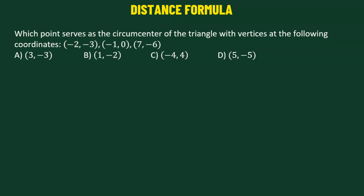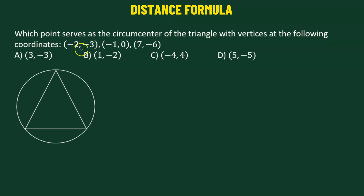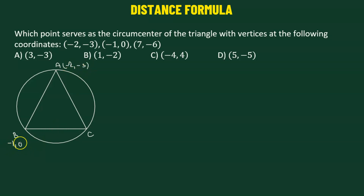In this problem, we need to find out the circumcenter of a triangle with vertices given by negative 2 comma negative 3, negative 1 comma 0, and 7 comma negative 6. We have a triangle which is circumscribed inside a circle. We'll call the vertices A, B, and C, such that A has the coordinate negative 2 comma negative 3, B has the coordinates negative 1 comma 0, and C has the coordinate 7 comma negative 6. Our goal is to determine the center of the circle, or the circumcenter of the triangle.